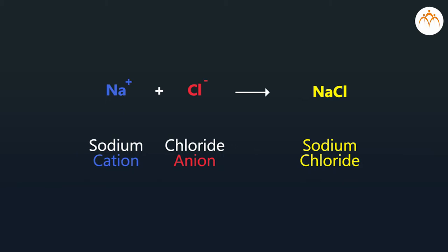Sodium cation plus chloride anion gives sodium chloride. Due to the attraction between opposite charges of cation Na+ and anion Cl-, chemical bonds are formed and sodium chloride (NaCl) is produced.